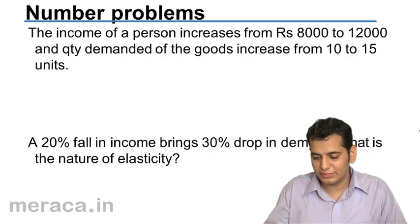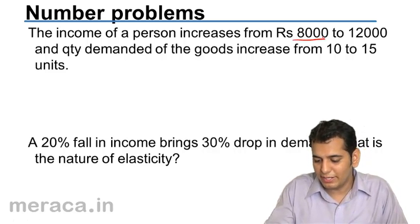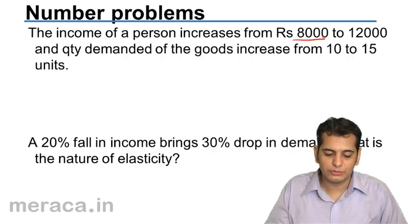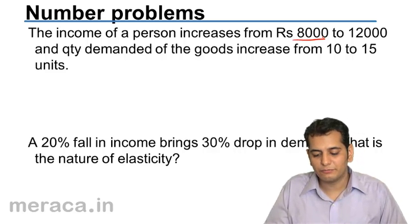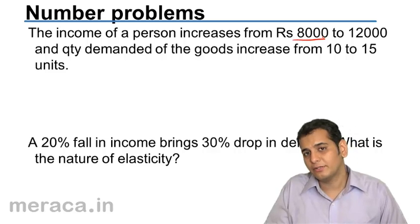First, the income of a person increases from 8,000 to 12,000 and quantity demanded of the goods increase from 10 to 15 units.